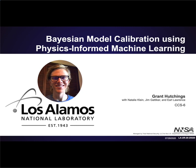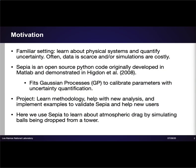This talk will illustrate the power of Sepia through a simple physics example. We will learn about atmospheric drag by simulating balls falling from a tower. As is so often our motivation here at the lab, our goal is to learn about complex physical systems. We want to understand physical parameters and quantify their uncertainty. Experimental and simulation data are often scarce due to cost and complexity. This is where our methods truly shine.